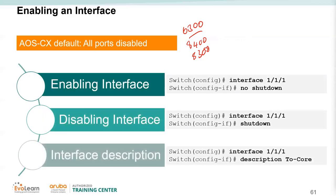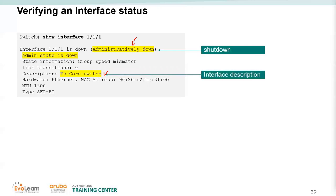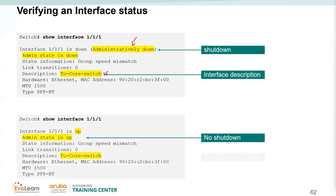'Show interface 1/1/1' shows the interface state. If administratively shut down, it will show as 'admin down'. If 'no shutdown' has been issued, the interface will be up. The description of the interface also appears in this output.